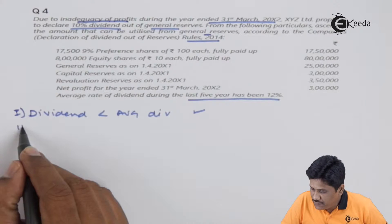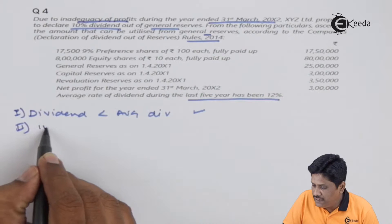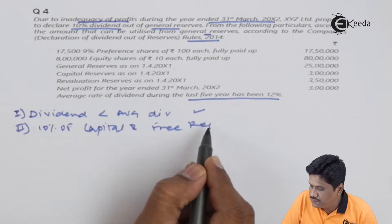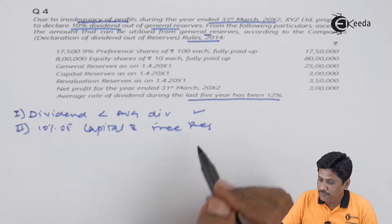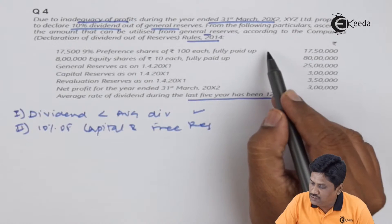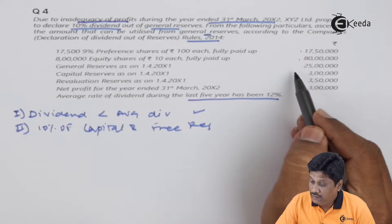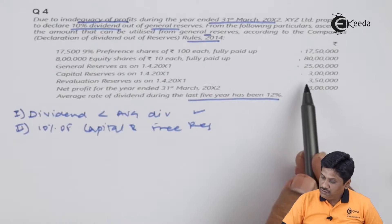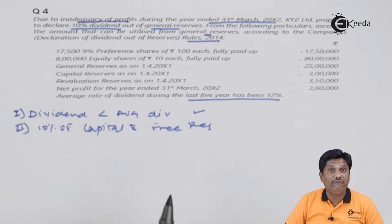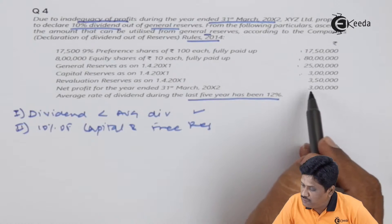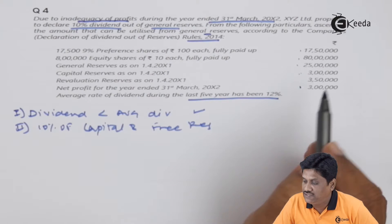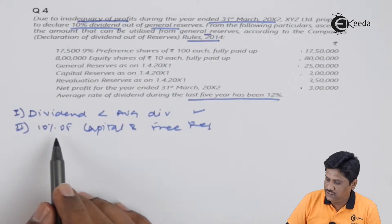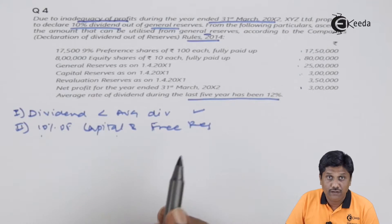दूसरा rule यह है कि आप जो भी withdraw करोगे वो maximum 10% of the capital and free reserves होगा. आपके पास two capitals हैं, और general reserve और capital reserve भी आपका profit है. इसका 10% maximum आप withdraw कर सकते हो. लेकिन ध्यान देना - net profit में से सबसे पहले preference dividend लेना पड़ेगा, उसके बाद का profit account करना पड़ेगा. Maximum amount withdraw कर सकते हो: 10% of the capital and free reserves.